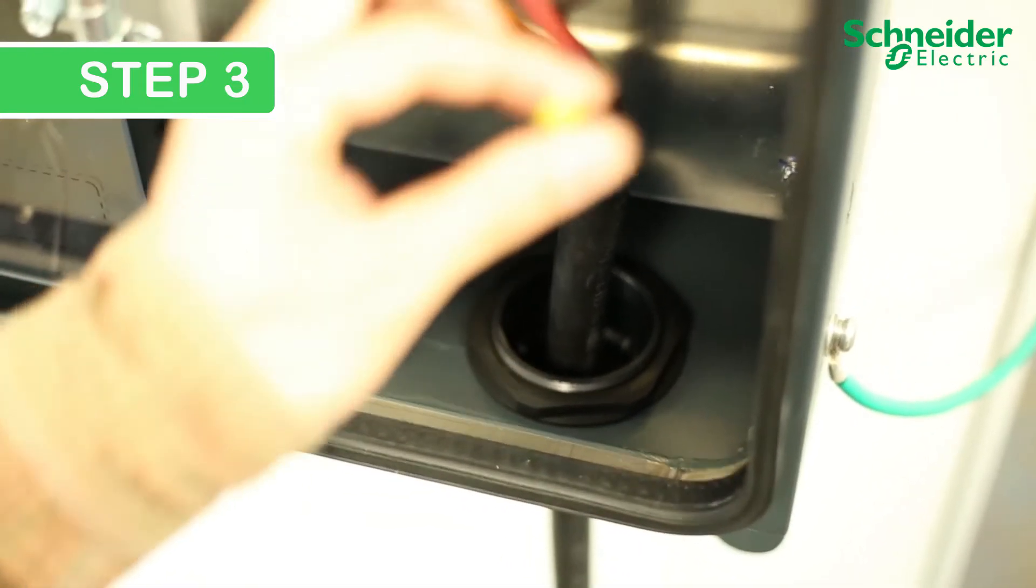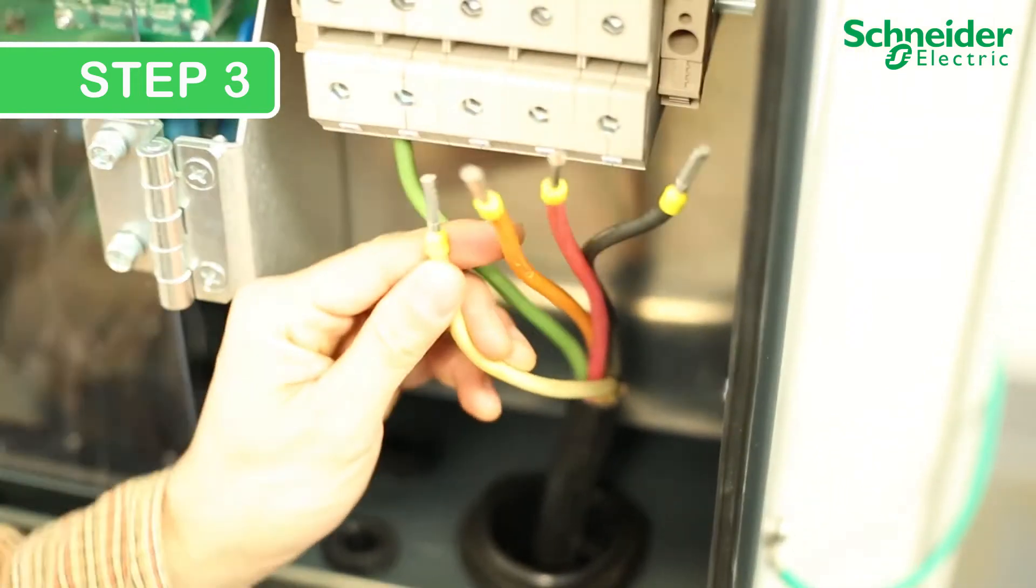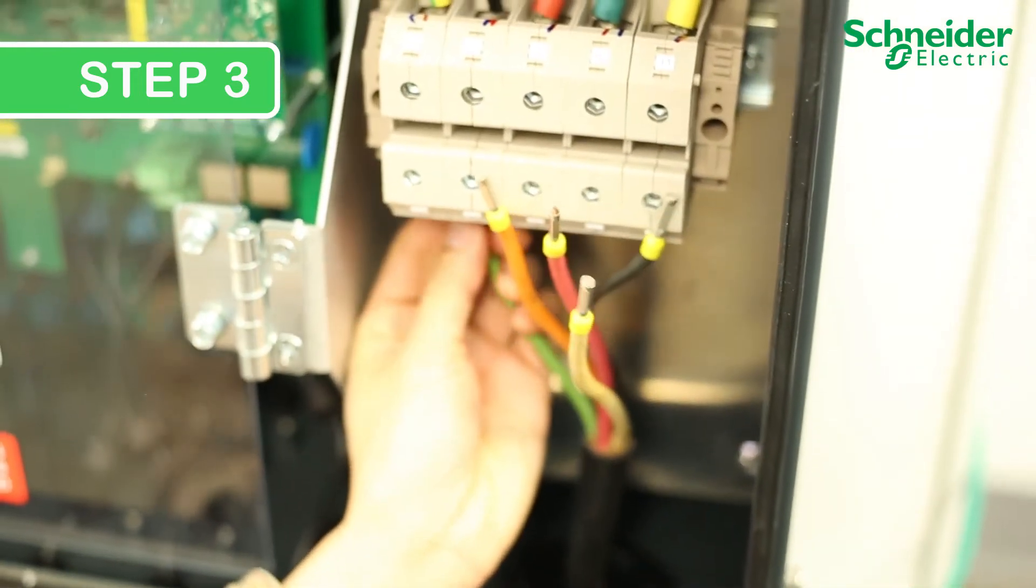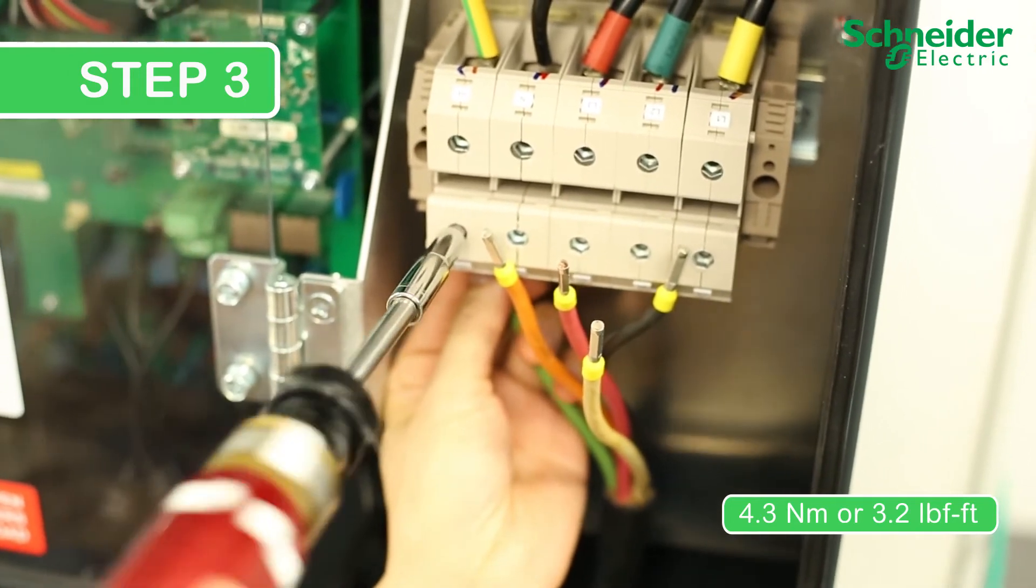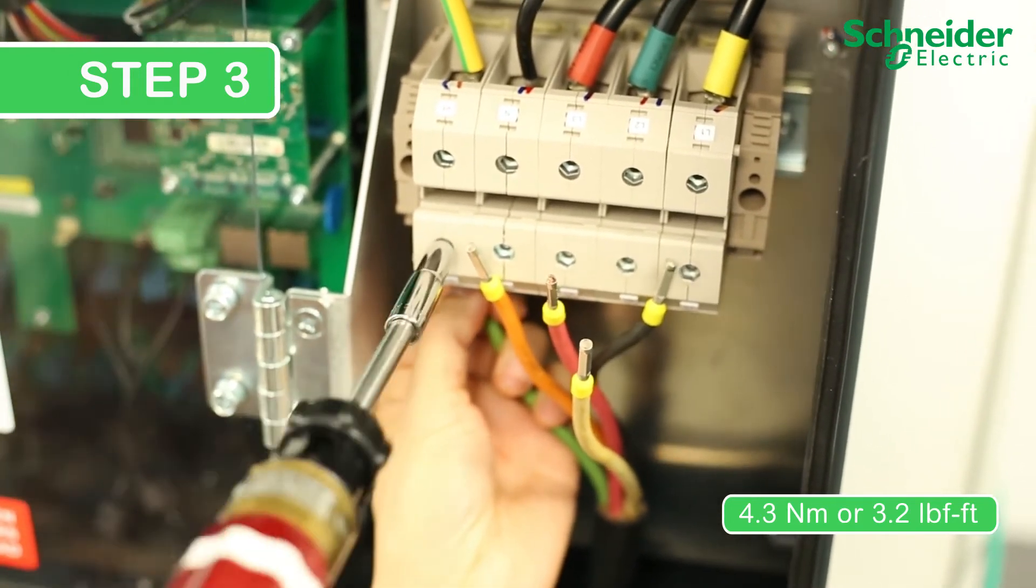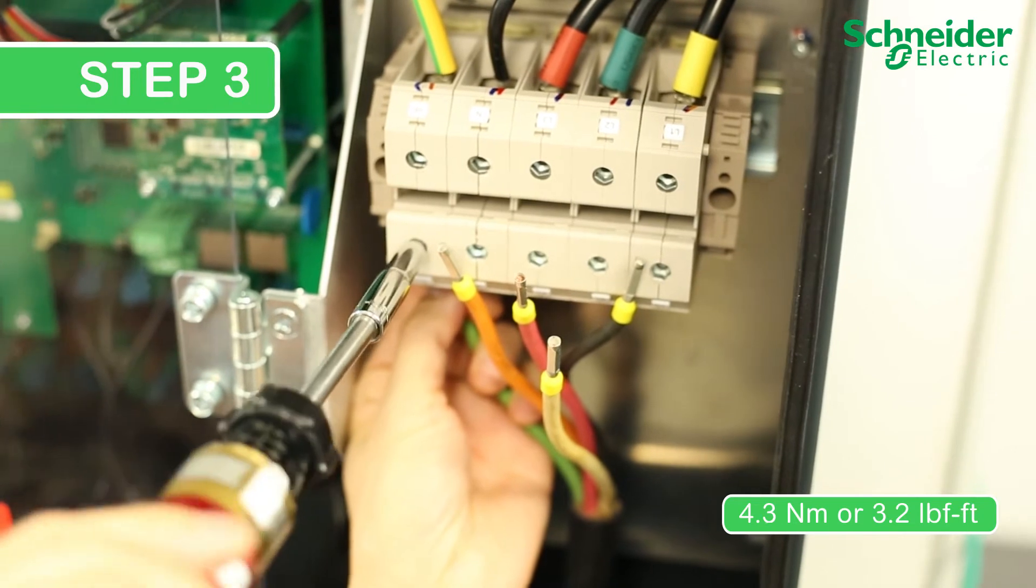Install the AC conductors on the CL60E starting with the ground wire. Ensure to correctly torque the terminals to 4.3 Nm or 3.2 lb. Ensure each phase is installed in the correct order.